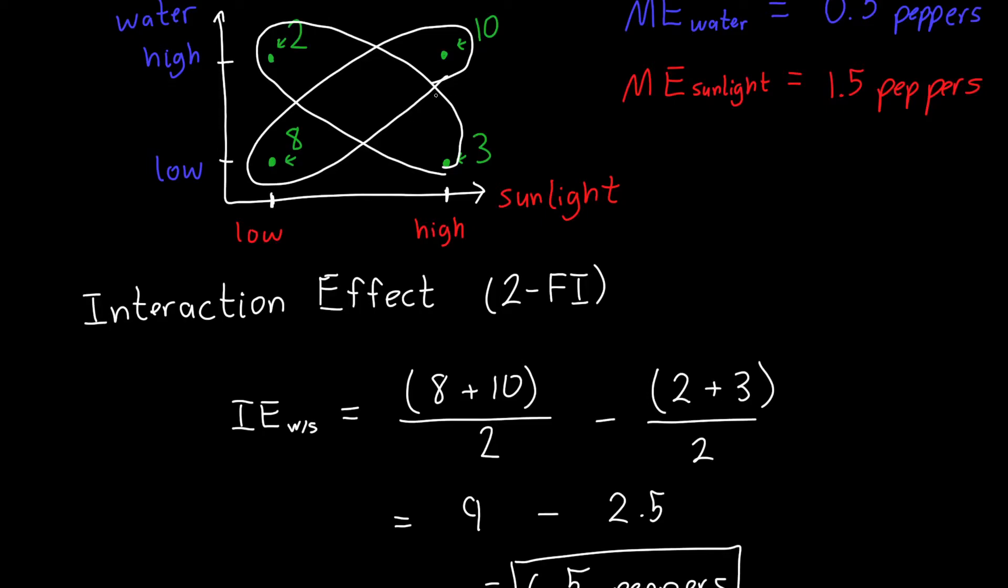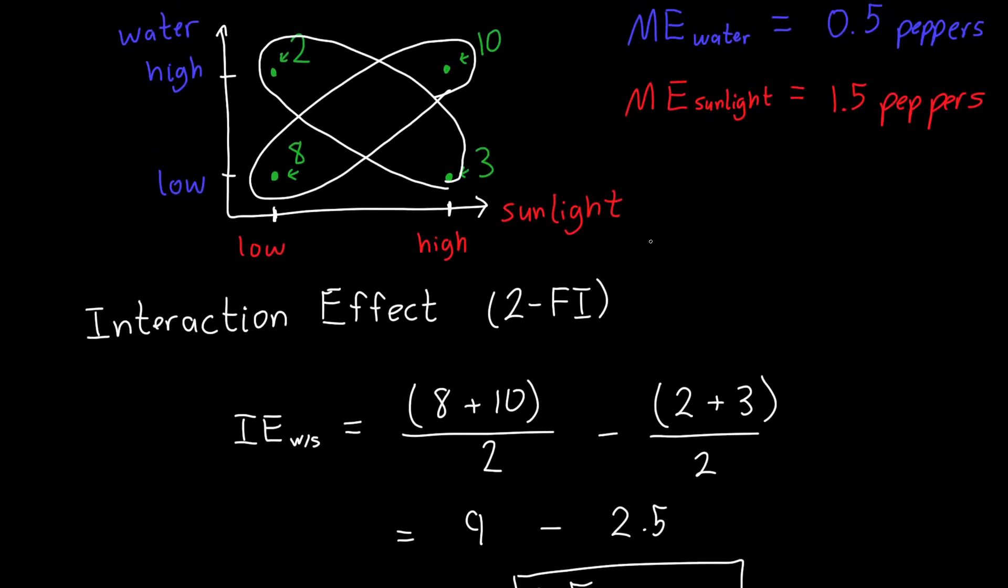And interaction effects happen all the time. So in this case, we might expect them to happen because maybe if I give my peppers a large amount of sunlight, if I don't give them enough water, which is this case here, then maybe they'll burn. But if I do give them enough water, then they can take advantage of the sunlight to grow. And similarly, maybe if I give them too much water, but not enough sunlight, they drown. But if I give them a low amount of water and sunlight, they're not growing quite as well as they did with a high amount of water. But at least they're not drowning, as in this case, or they're not burning, as in this case. So this is a great example of a two-factor interaction.